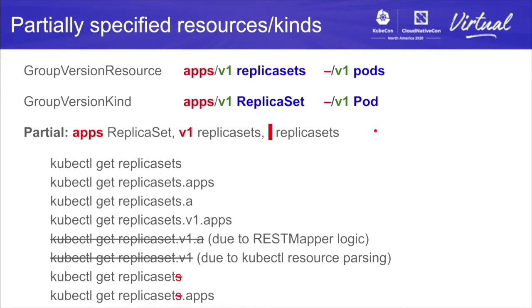Group version resources and group version kinds are called fully qualified or complete if the group, version, and name are all provided. If the group is empty, it's a legacy core group, like for pods. We can also talk about partial resources and partial kinds. If the version is missing, 'apps/ReplicaSet' is a partial kind. 'v1/replicasets' lowercase is a partial resource where the group is missing. And if both kinds of information are missing — like 'replicasets' alone with no group and no version — that's also partial, which is what everyone knows from kubectl, e.g., 'kubectl get replicasets'.